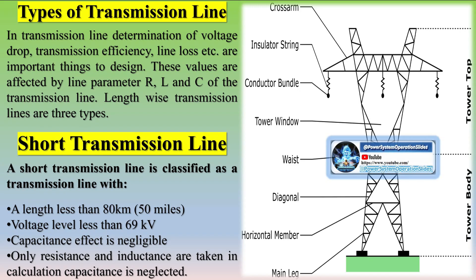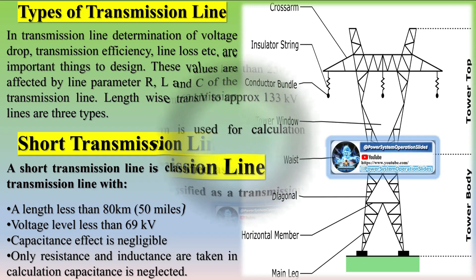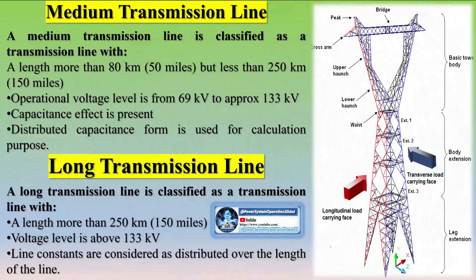In transmission line design, determination of voltage drop, transmission efficiency, and line loss are important factors. These values are affected by line parameters R, L, and C. Lengthwise, transmission lines are three types: short, medium, and long.